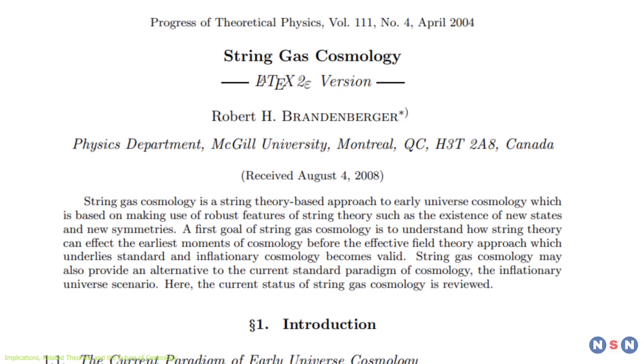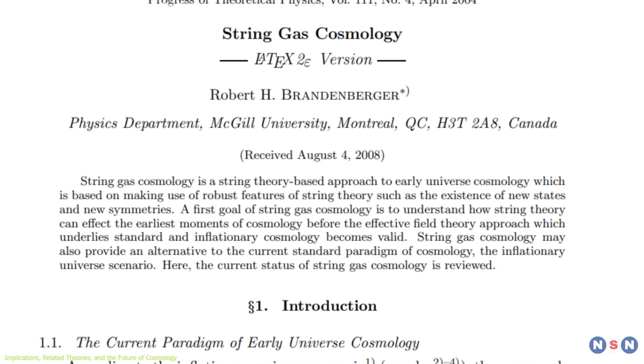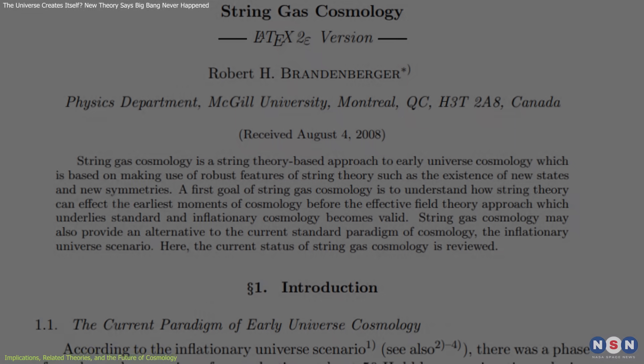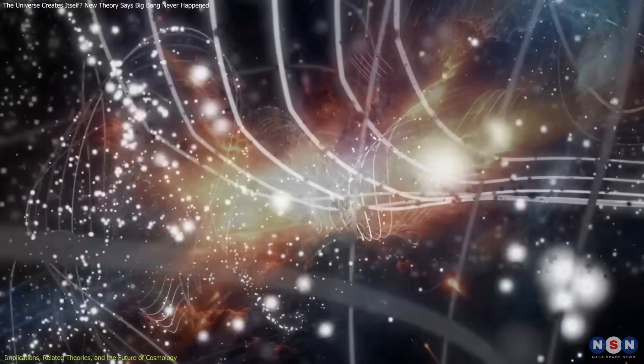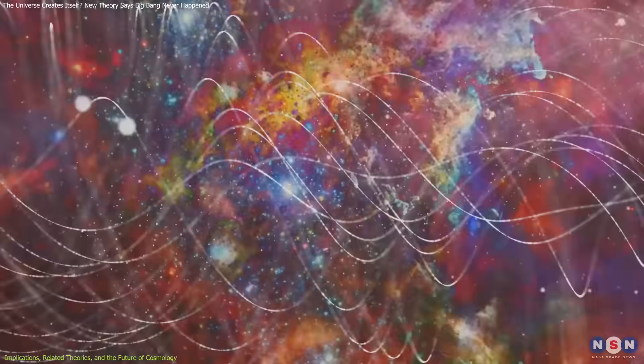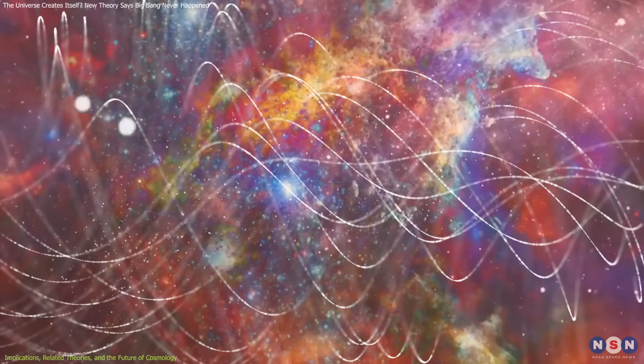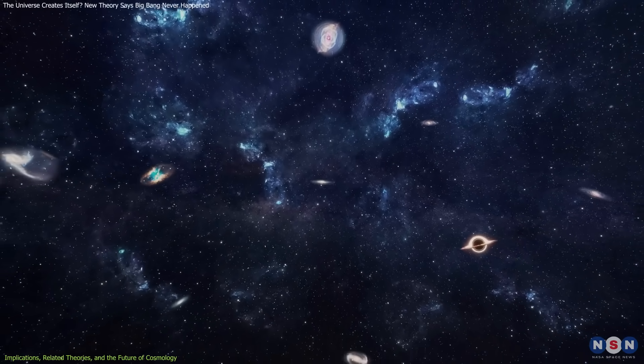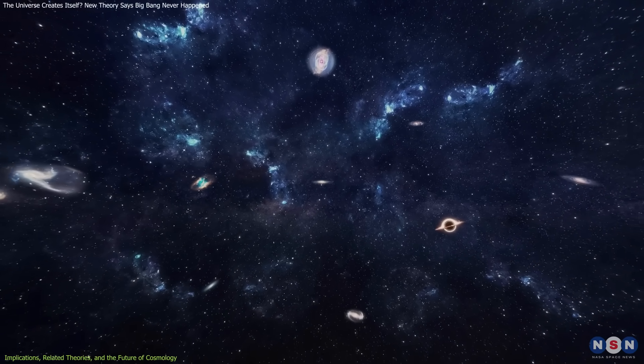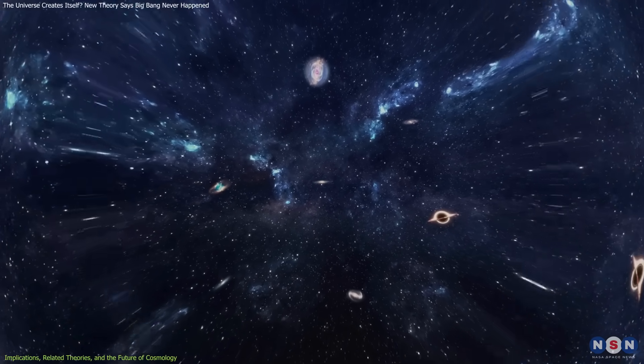From the realm of string theory, string gas cosmology introduces a different twist. It suggests that the early universe was filled with one-dimensional strings rather than particles, and that thermal and dimensional dynamics in this environment prevented the formation of singularities. This model also explains why only three spatial dimensions expanded to form our observable universe.